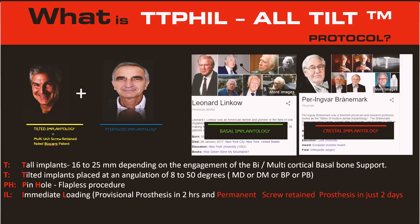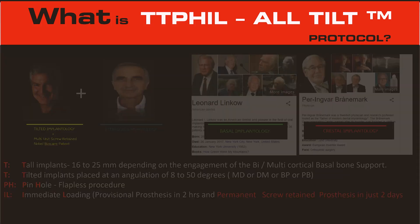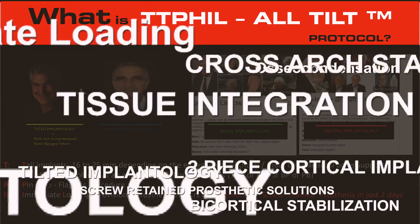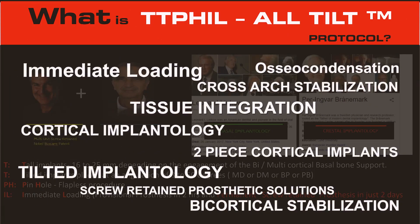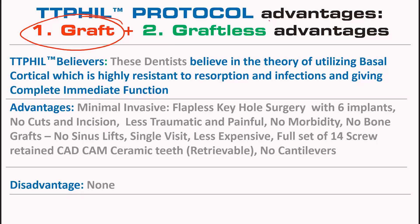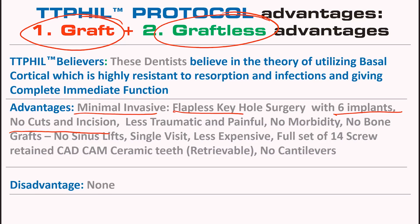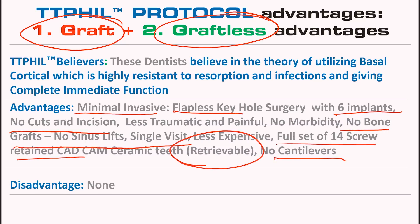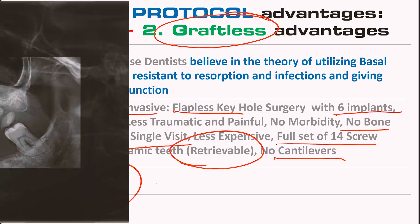TTPHL all tilt protocol is a graftless approach that is evidence-based and anatomic-driven, incorporating all the golden principles of conventional and modern implantology. It is a universal concept for both ideal and atrophic ridges.